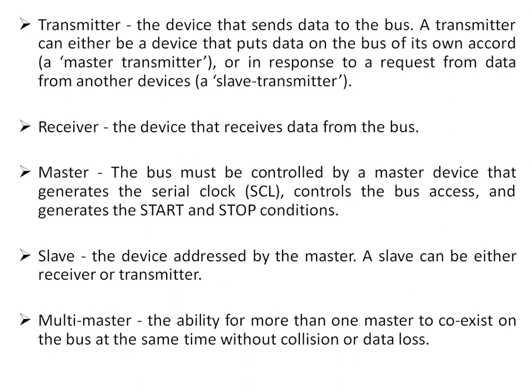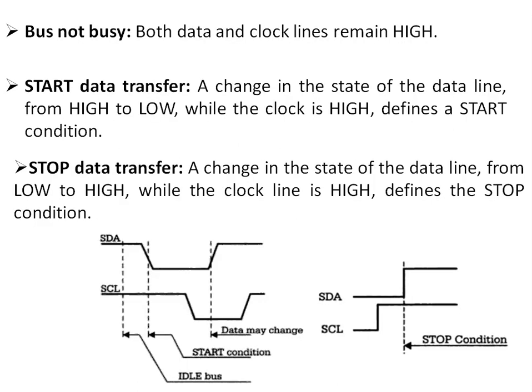Multi-master: I2C supports a multi-master bus — the ability of more than one master to coexist on the bus at the same time without collision or data loss. When the bus is not busy, it is driven high through the pull-up resistor. Data transfer is initiated by the master. A change in the state of the data line from high to low while the clock is high defines the start condition.